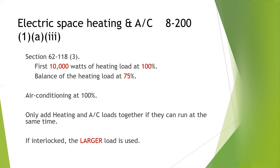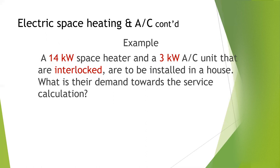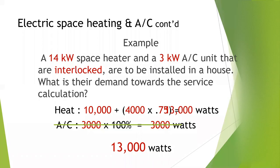Example: a 14 kilowatt space heater and a 3 kilowatt AC unit are interlocked and installed in a house. What is their demand toward the service calculation? Because they're interlocked, we get rid of the AC amount and focus solely on the larger of the two — the 14 kilowatt space heater.